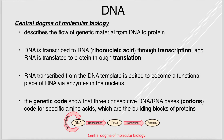DNA will eventually become protein through the central dogma of molecular biology. The first step is transcription: DNA is transcribed to a cousin molecule known as RNA (ribonucleic acid). Then RNA is translated to protein through the process of translation. Transcription occurs in the nucleus; translation occurs in the cytoplasm.